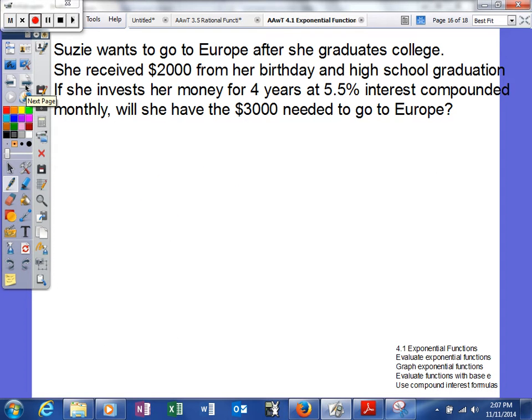So here's our example. Susie wants to go to Europe after she graduates college. She received $2,000 from her birthday and high school graduation. If she invests her money for four years at 5.5% interest compounded monthly, will she have the $3,000 needed to go to Europe?